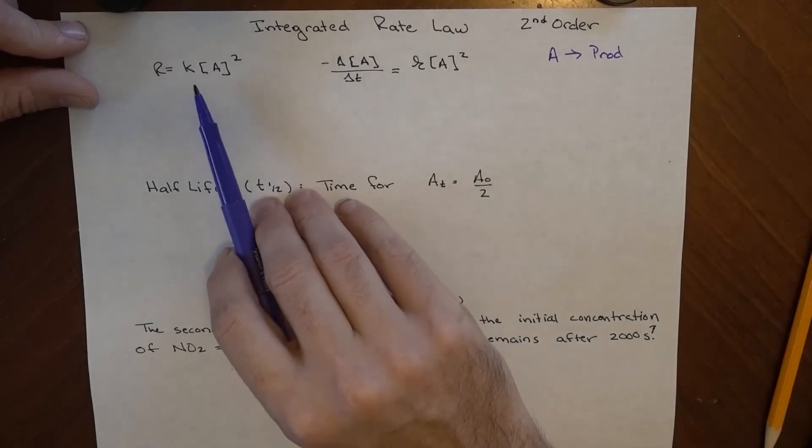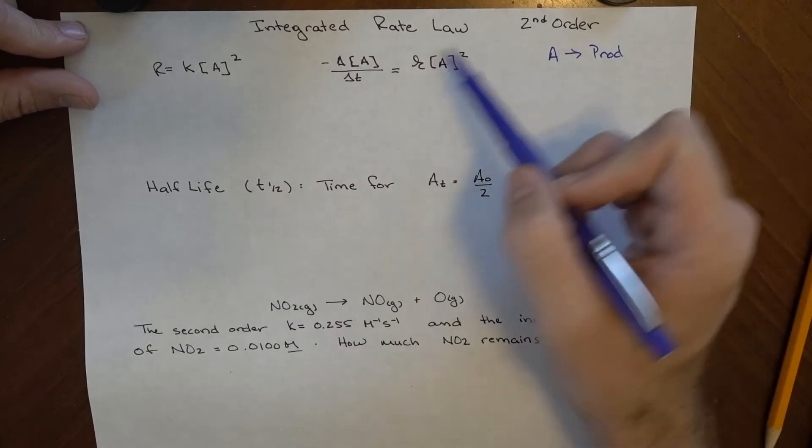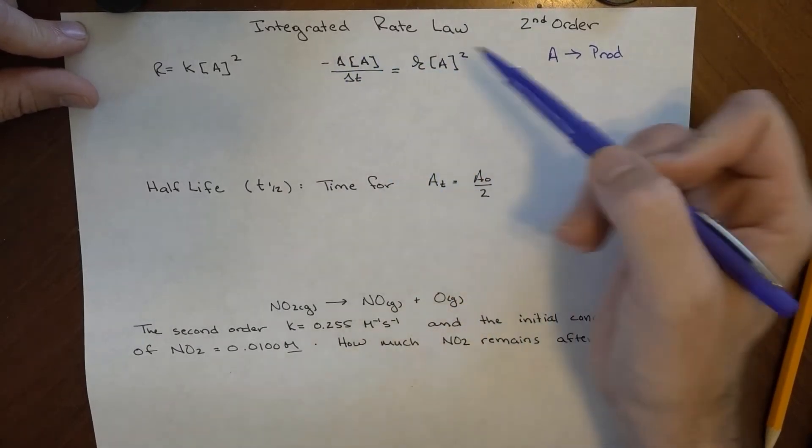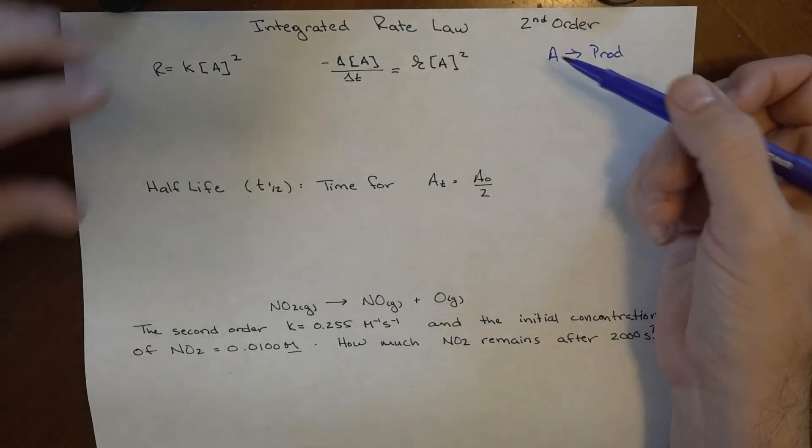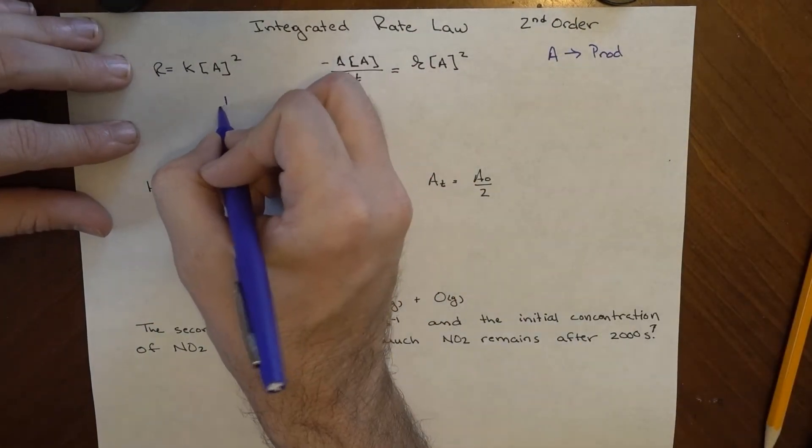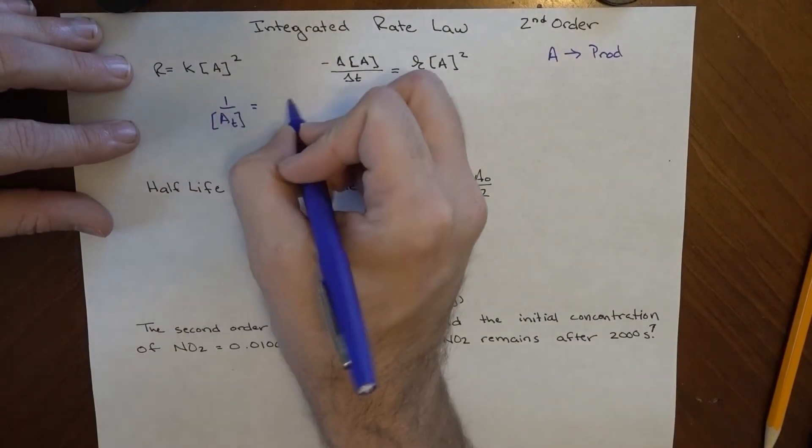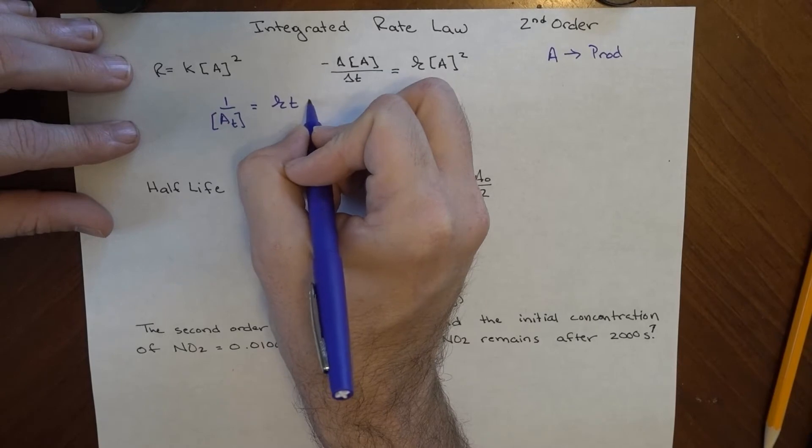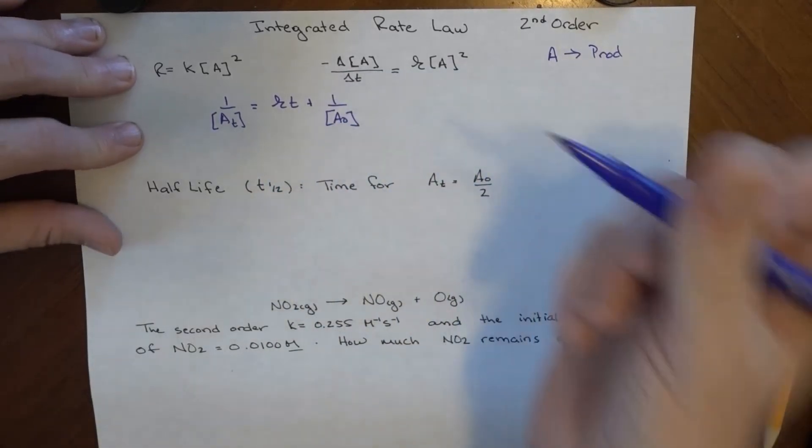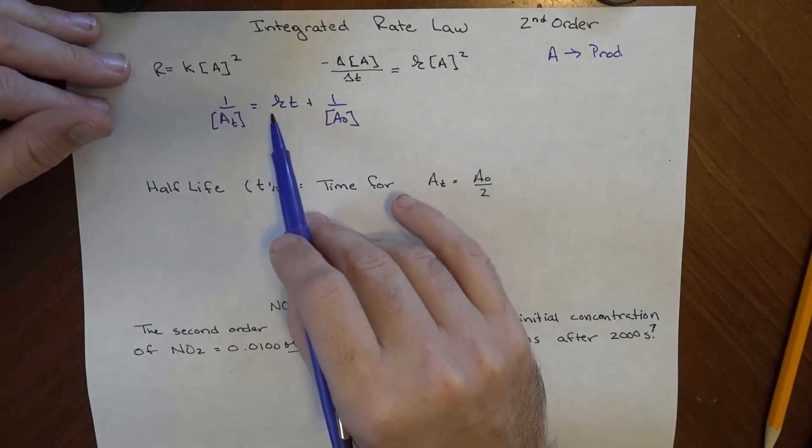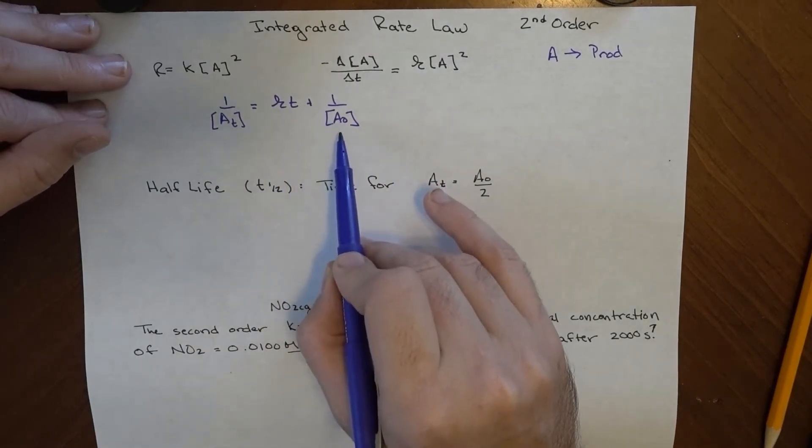We do know that the rate law looks like this: R = k[A]². This is the rate of change of A and it's equal to k[A]², so again, if we use just a touch of calculus, we can end up with an expression that looks like this: 1/[A] at time t is equal to k times time plus 1/[A]₀.